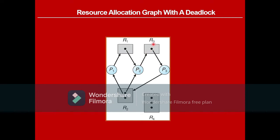P2 wants R3 but it is held by P3. P3 wants an instance of R2, but it is not available — one instance of R2 is with P1 and the other instance is with P2. So P3 currently cannot get an instance of R2 — it has requested but cannot have it. R4 is not requested by anybody. So this scenario is a deadlock because P3 wants R2 but cannot get it, as it is occupied by P1 and P2.